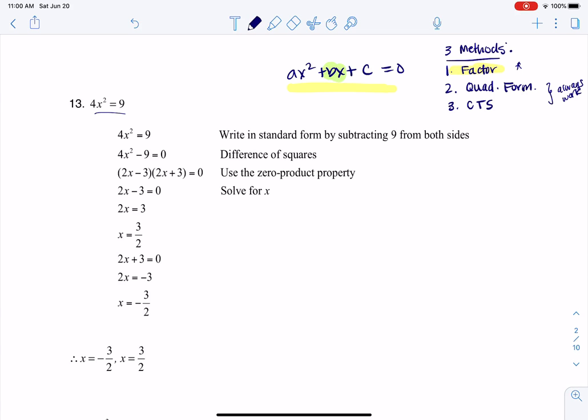So I don't have that linear term, so I have 4x squared equaling 9. I can set that equal to 0. And here, at this point, again, you could factor, you could use a quadratic formula, or you could complete the square, and I opted to factor.